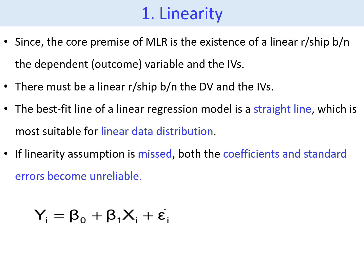Linearity is the first assumption of the linear regression model. The core premise of linear regression is the existence of a linear relationship between the dependent and the independent variables. From the name itself, we can conclude that there must be a linear relationship between them. Hence, the best-fit line of a linear regression model is a straight line, which is most suitable for linear data distribution. If this basic assumption of linearity is violated, both the coefficients and standard errors become unreliable.